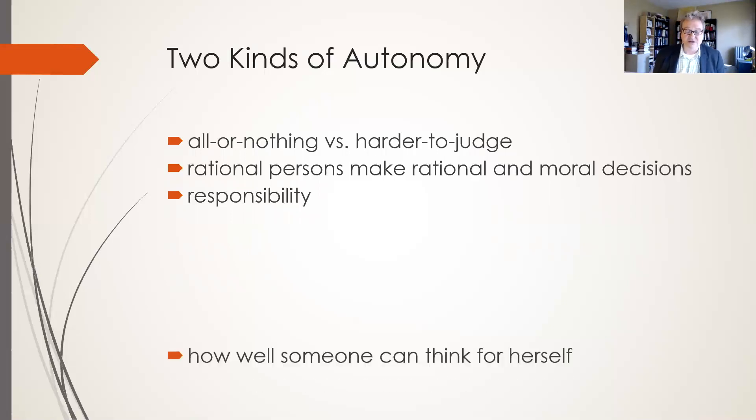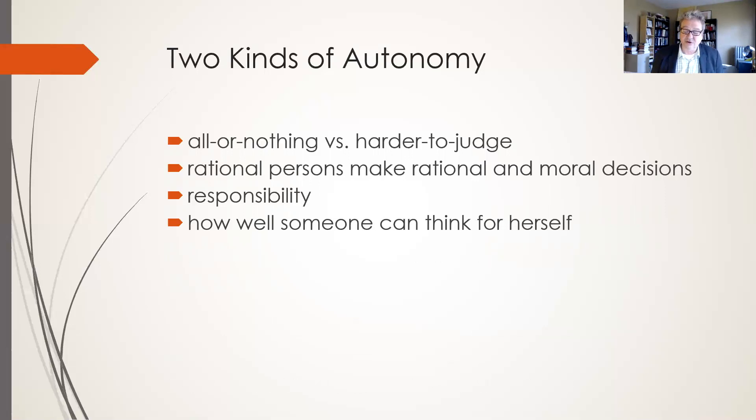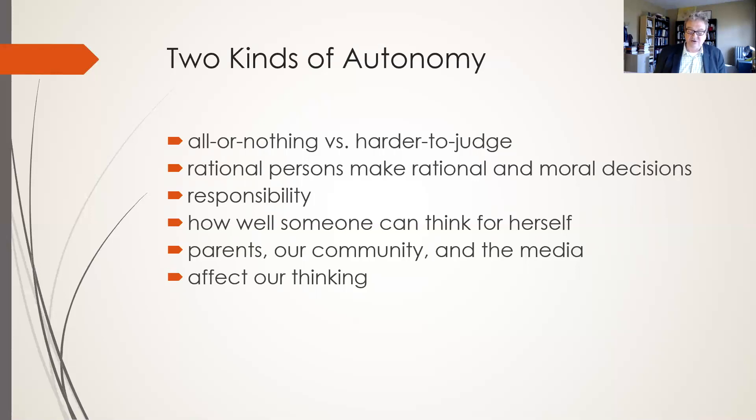The harder to judge sense of autonomy refers to how well someone can think for herself. In our day-to-day lives, we are subject to influences from our parents, our community, and the media. And even though we try to reject these influences, they will inevitably affect our thinking. Kupperman argues that to become more autonomous in major areas of one's life, one must know what one really thinks and choose what one really wants. It is the development of a self. The college years are very crucial times for this kind of development.